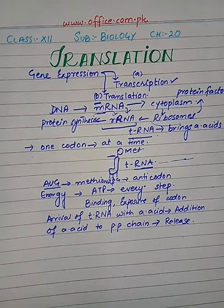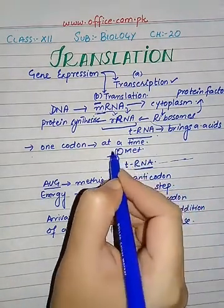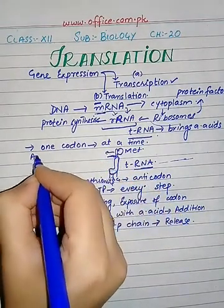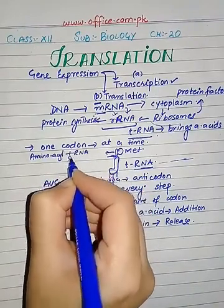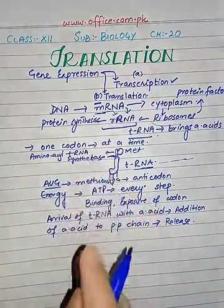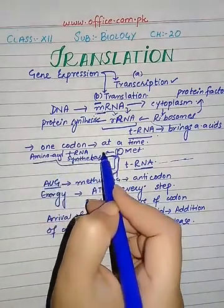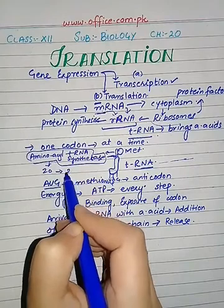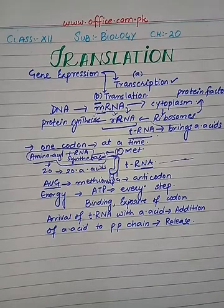Particular tRNA molecules are attached to specific amino acids through the action of activating enzymes called aminoacyl tRNA synthetase. This binding of amino acid to transfer RNA is governed by aminoacyl tRNA synthetase. These enzymes are also known as activating enzymes — one exists for each of the 20 amino acids. So there are 20 different enzymes for 20 amino acids.